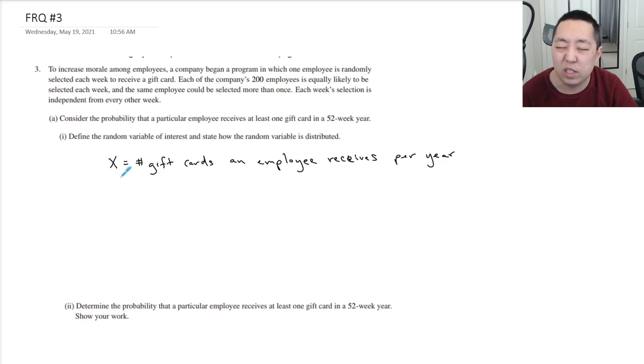I don't know if this is the only solution they would be looking for. There's kind of a weird way to ask it. What's the random variable of interest? This is the way I would do it. And this probability that I'm looking for is the probability that X is greater than or equal to one. That means he gets at least one gift card in a given year.